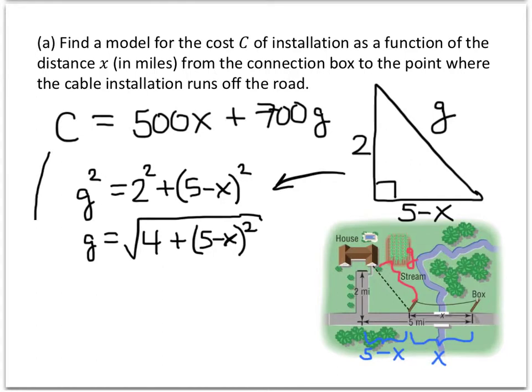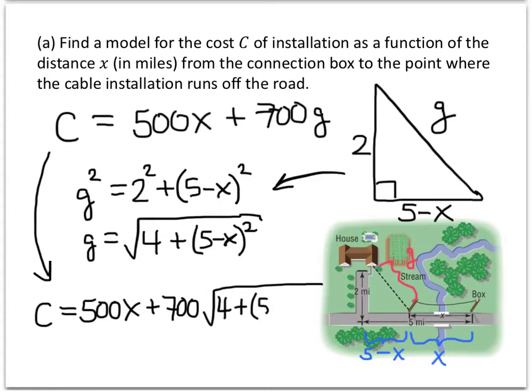So that means that my cost model I can figure out with just the one variable now. It's 500x plus 700 times that thing I was calling g, but now I know better. Now I know that it's really 4 plus the quantity 5 minus x squared. And again, you see a square root, you see something squared, you want to get rid of those things, but we can't do that because the whole thing is not squared. If the 4 plus wasn't here, we could cancel those two things out. But that 4 plus is there, so we have to leave it like that. So that's our model. It's pretty complicated, but that's what the model looks like.